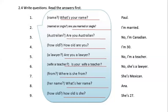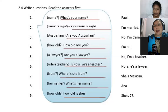Here you see a conversation: What's your name? Paul. Are you married or single? I'm married. Are you Australian? No, I'm Canadian. How old are you? I'm 30. Are you a lawyer? No, I'm a teacher. Is your wife a teacher? No, she's a lawyer. Where is she from? She's Mexican. What's her name? Ana. How old is she? She's 27. What we would like to do now is go to the breakout rooms and ask each other these questions and provide answers.